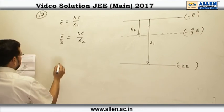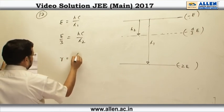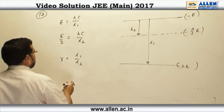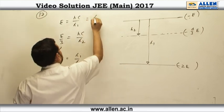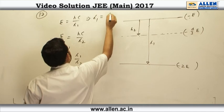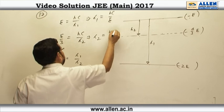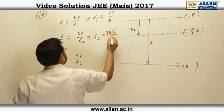So, the question asks us to calculate r is equal to lambda 1 over lambda 2. We can simply calculate from here lambda 1 is going to be h c over e, from here lambda 2 is going to be 3 h c over e.